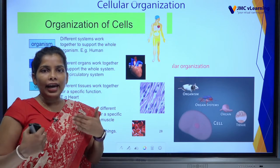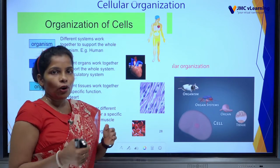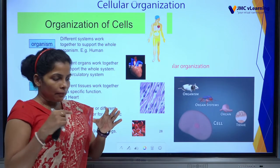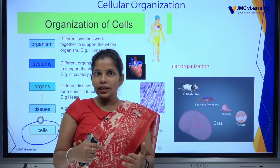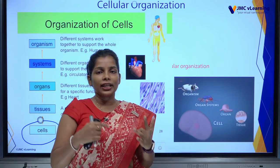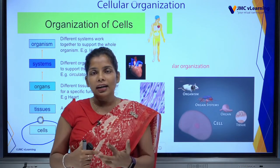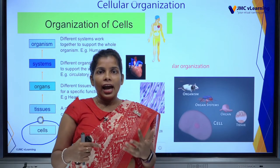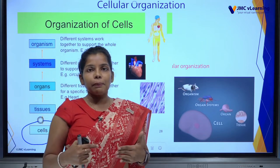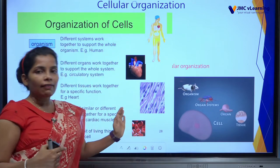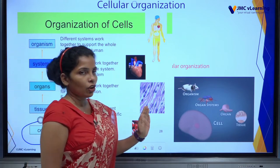Can you tell me what the eight characteristics of organisms are? The mnemonic word is Mrs. Grain: M = Movement, R = Respiration, S = Sensitivity, G = Growth and Development, R = Reproduction, E = Excretion, N = Nutrition, and the final one is Cellular Organization.